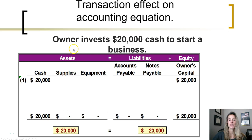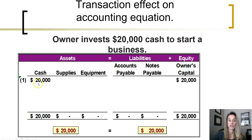When an owner invests $20,000 cash to start a business, the owner is giving cash to the business to get it started. Remember, the basic accounting equation is assets equal liabilities plus equity. The business received $20,000 cash. Cash is an asset, so the company would need to record an increase to their cash asset account. In order for this equation to remain in balance, something else has to happen. Assets — the left side of the equation — increased, so something else needs to change as well.